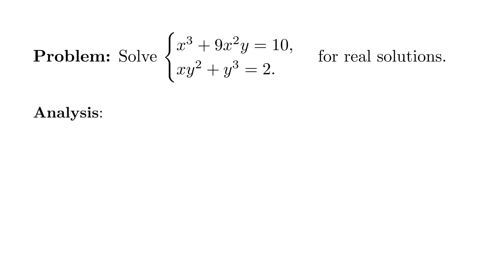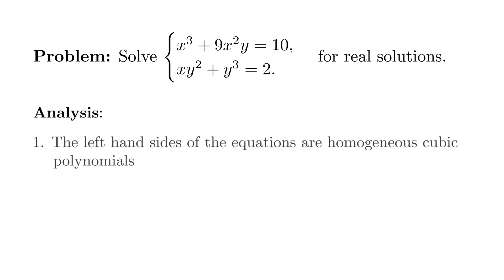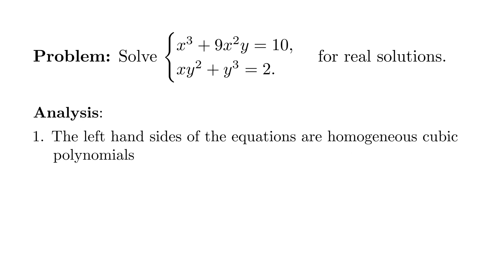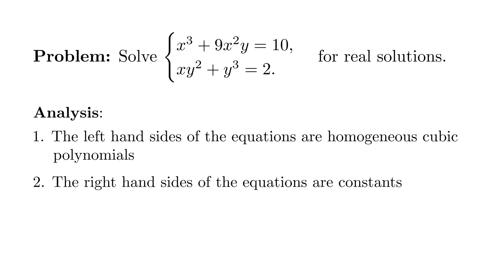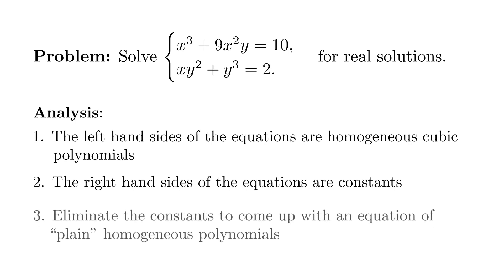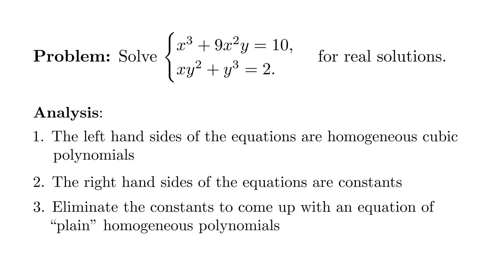Here is the idea. First, the left-hand side of both equations are homogeneous cubic polynomials. And secondly, their right-hand sides are all constants. So we can eliminate the right-hand side constant to come up with an equation of a homogeneous polynomial equal to zero. The problem can then be solved by factoring the polynomial.